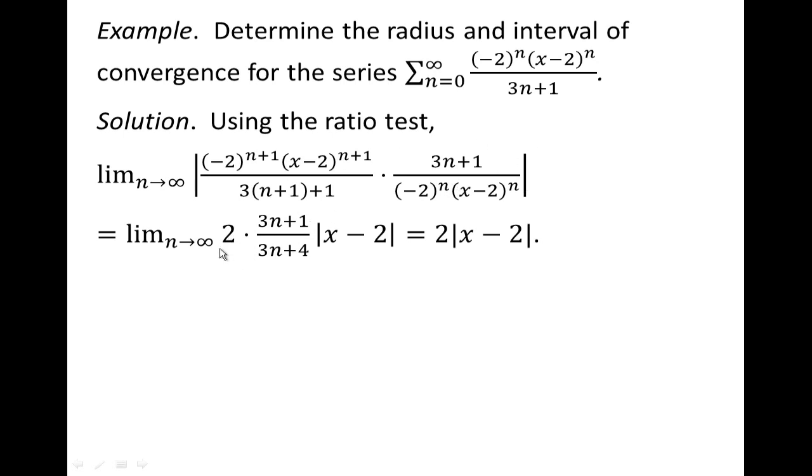Our rational function in n, 3n plus 1 divided by the quantity 3 times the quantity n plus 1 plus 1 becomes this term, and then our powers of x minus 2 just reduce to the absolute value of x minus 2.